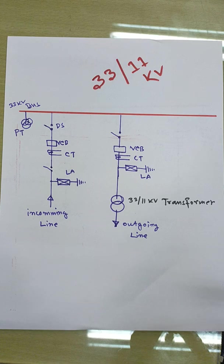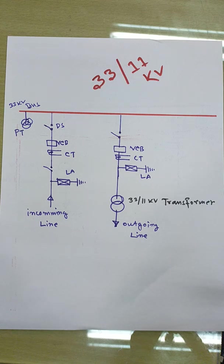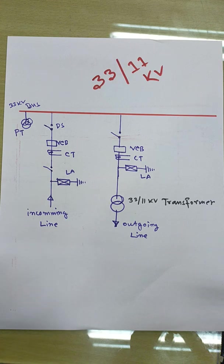You can see the basic power system. You can see the basic diagram and the basic elements. So we are going to discuss this with a 33 by 11kV substation. This is a very simple diagram.